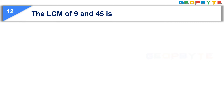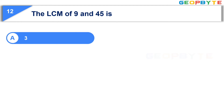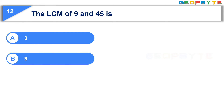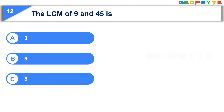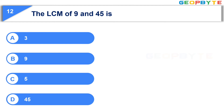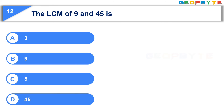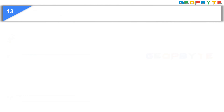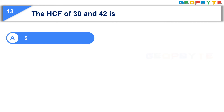Moving to the 12th question: The LCM of 9 and 45 is — Option A: 3, Option B: 9, Option C: 5, Option D: 45. Your time starts now. Your time is up and the correct answer is Option D, 45.